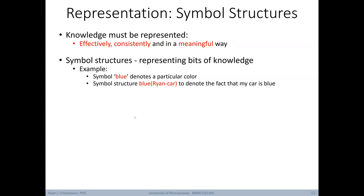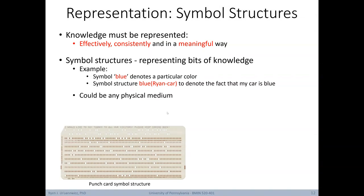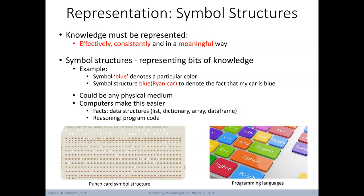Symbol structures can help represent bits of knowledge. For example, the symbol 'blue' denotes a particular color, and the symbol structure 'blue(ryan-car)' denotes the fact that Ryan's car is blue. Symbol structures could be any physical medium — for example, punch cards from early computing systems. Fortunately, computers make this process easier. Facts can be stored as data structures including lists, dictionaries, arrays, and data frames, and reasoning can be conducted using programming code.